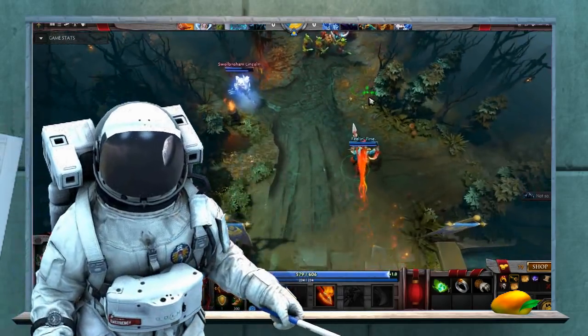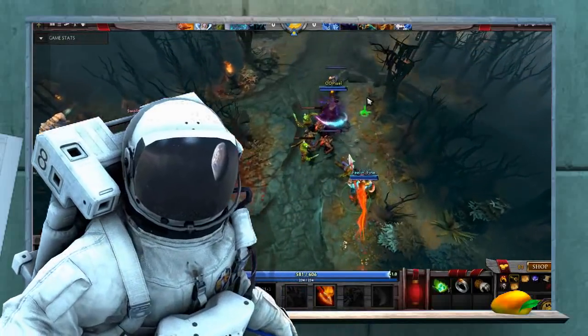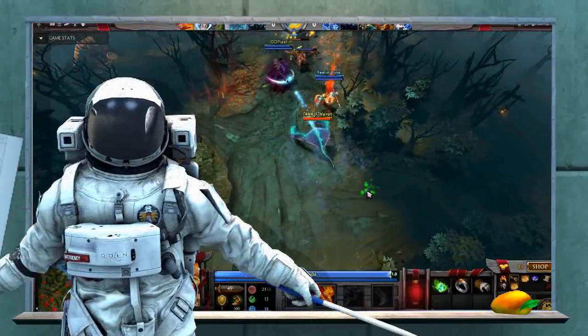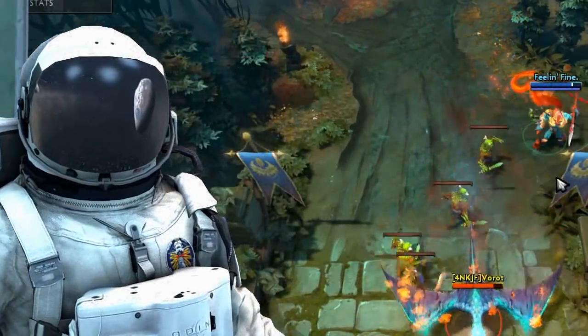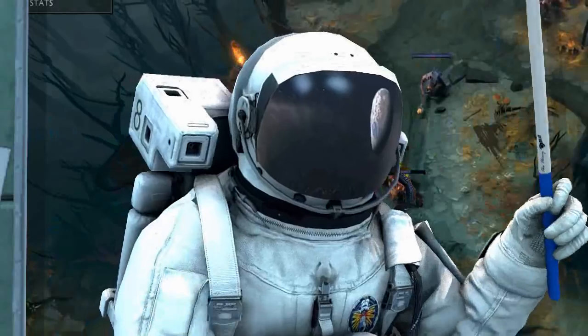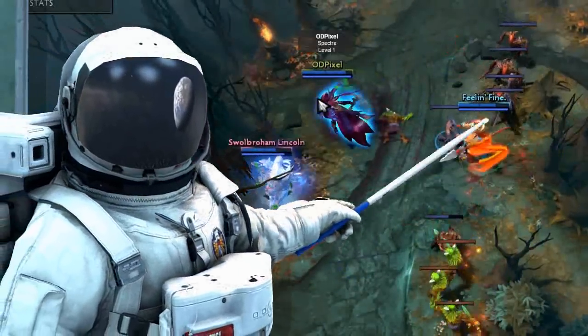Support Huskar? A support with no silences, no stuns, no crowd control until level 6. I love it. Huskar's support builds as tanky as possible, forgoes attack damage, and just harasses with orb walking and Burning Spear. It's pretty gross, dude.